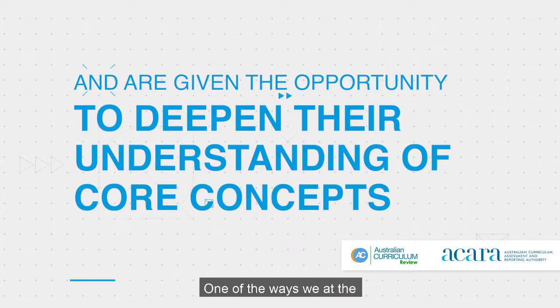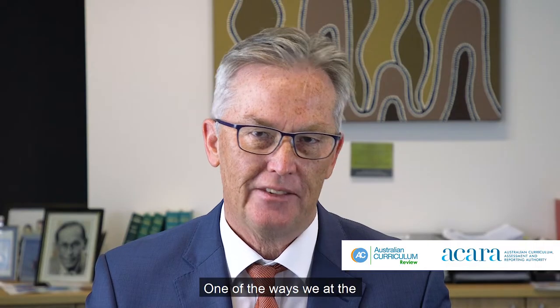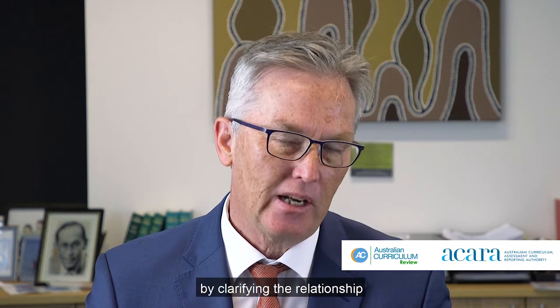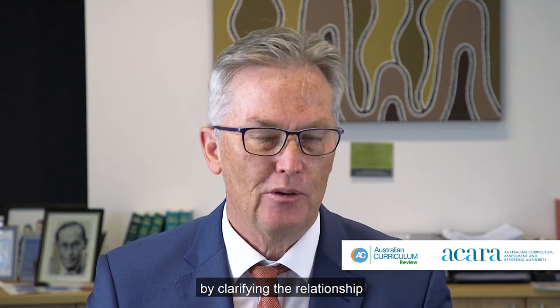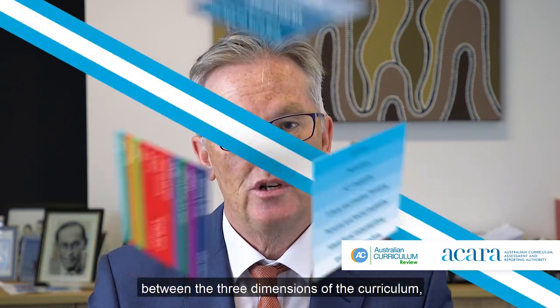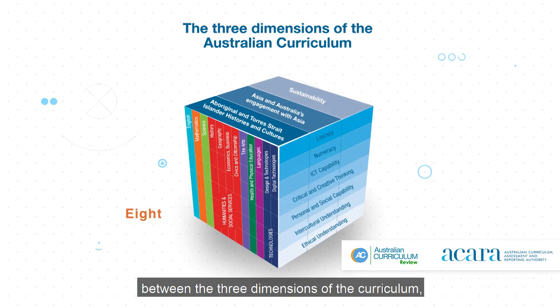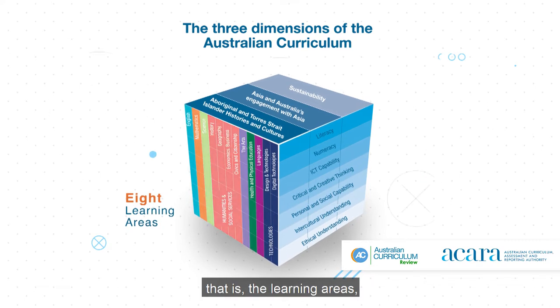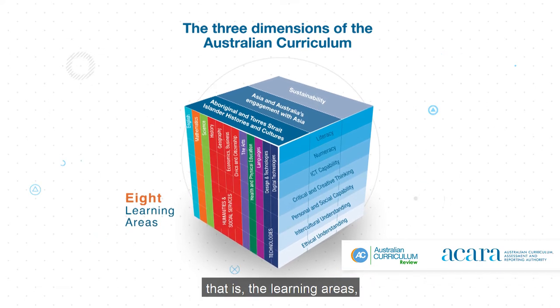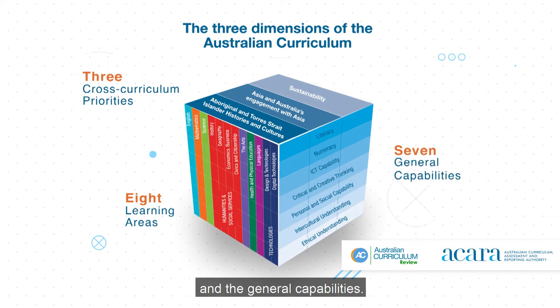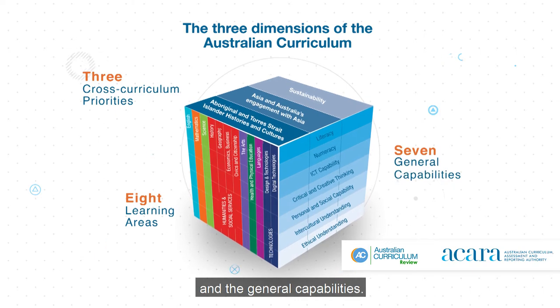One of the ways we at the Australian Curriculum Assessment and Reporting Authority are doing this is by clarifying the relationship between the three dimensions of the curriculum — that is the learning areas, the cross-curriculum priorities, and the general capabilities.